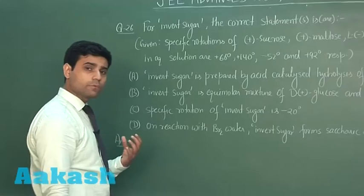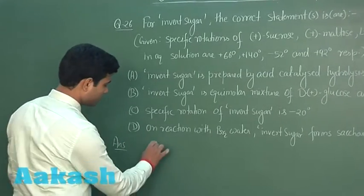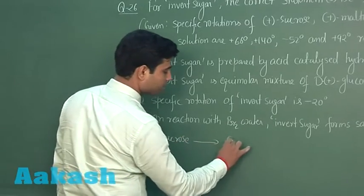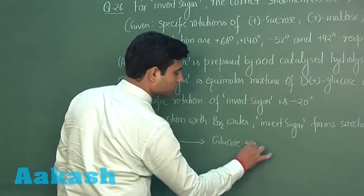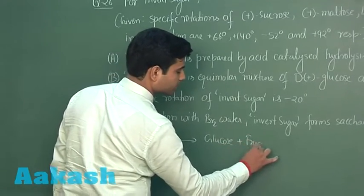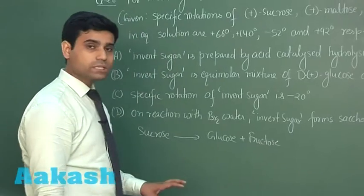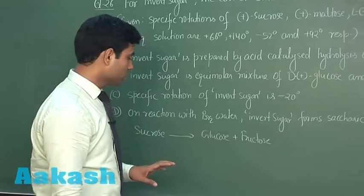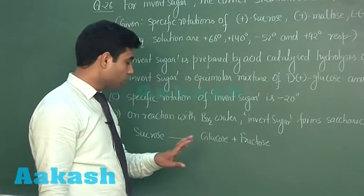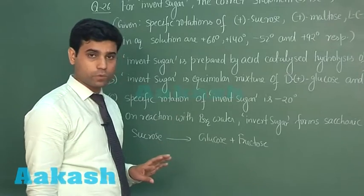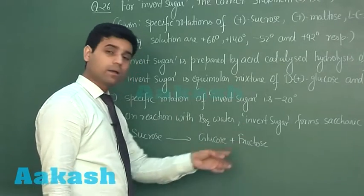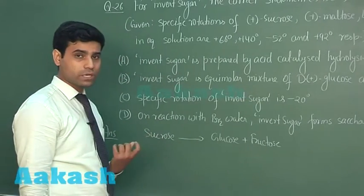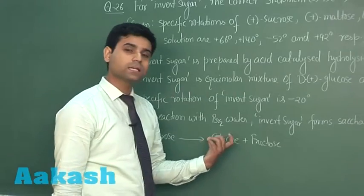Invert sugar is formed by the hydrolysis of sucrose. When sucrose is hydrolyzed, it gives us an equimolar mixture of glucose and fructose. Glucose is dextrorotatory and fructose is levorotatory. The levorotation of fructose is greater than the dextrorotation of glucose, so the resulting solution is levorotatory. Since sucrose itself is dextrorotatory, this solution is known as invert sugar.